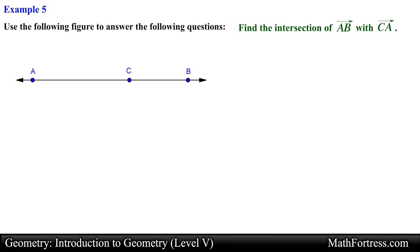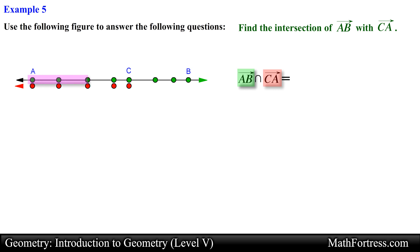Find the intersection of ray AB with ray CA. Using set notation this translates to ray AB intersection ray CA. Let's identify the set of all points located on ray AB, then identify the set of all points on ray CA. Now it's just a matter of finding where the set of points of these two rays intersect. We see that the set of points on both rays start intersecting at point A and end at point C — the set of points intersect along a common line segment, in this case line segment AC. So the intersection of these two rays is equal to line segment AC.